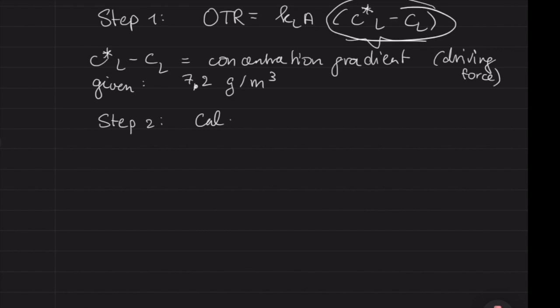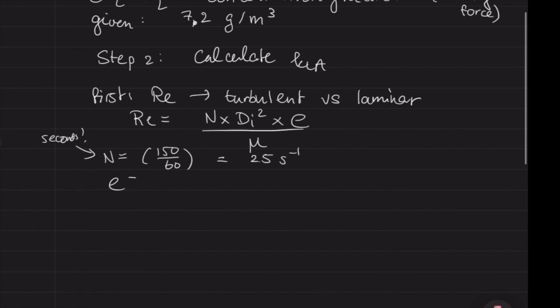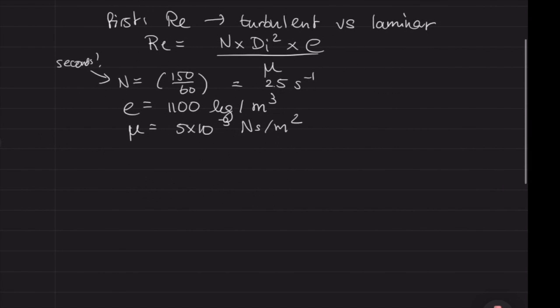In the next step, we're going to look at how to determine KLA. To do this, you always start by determining the power number. The power number we had to read off the charts you've seen in the PowerPoints before. Before you can do that, you first need to know whether the flow is turbulent or laminar. So we're going to determine the Reynolds number as we normally do. Bear in mind, make sure you have the speed, capital N, in hertz, in seconds rather than minutes, so divide by 60, which gives you 2.5 seconds minus one.